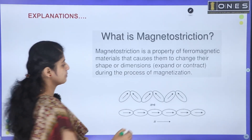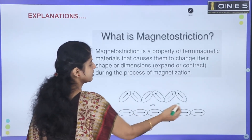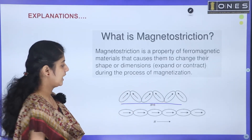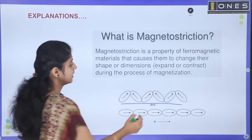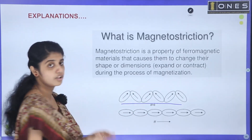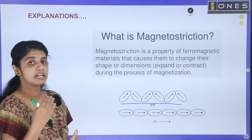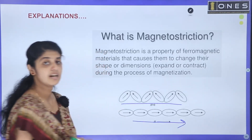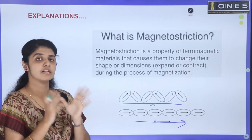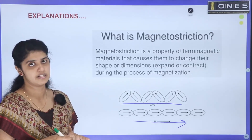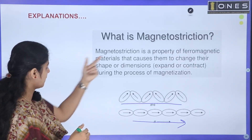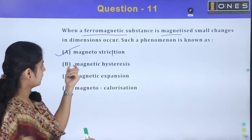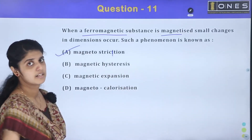We can change the dimensions in the same direction of magnetization. That is why the magnetostriction effect is created.